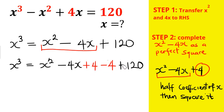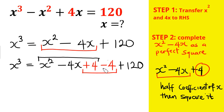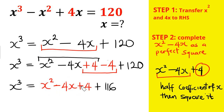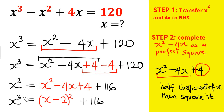The expression now becomes x³ = x² - 4x + 4 - 4 + 120. I add 4 to complete the square and balance it with minus 4, since plus 4 minus 4 equals zero — nothing has changed. Simplifying, minus 4 plus 120 gives 116, so x³ = (x - 2)² + 116.